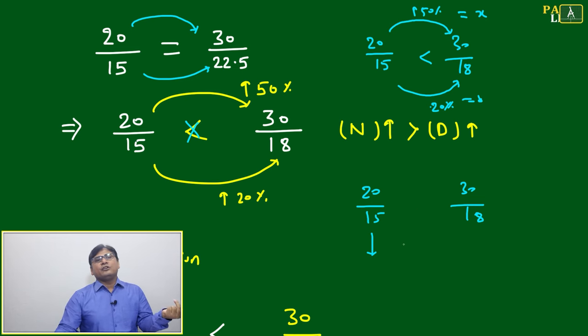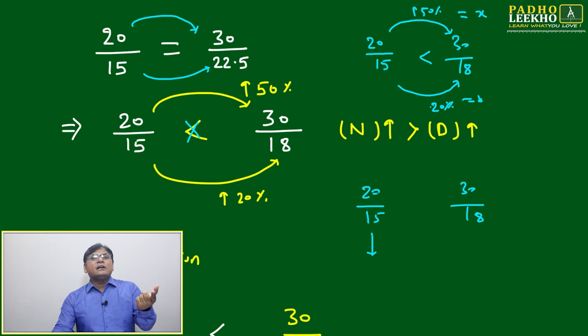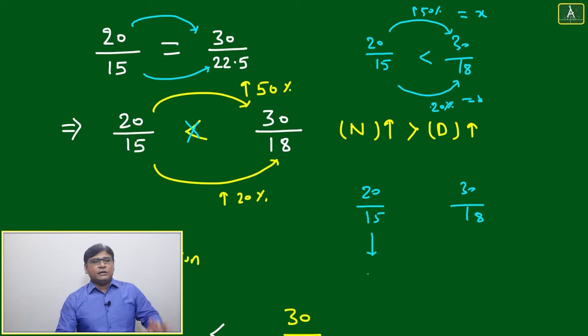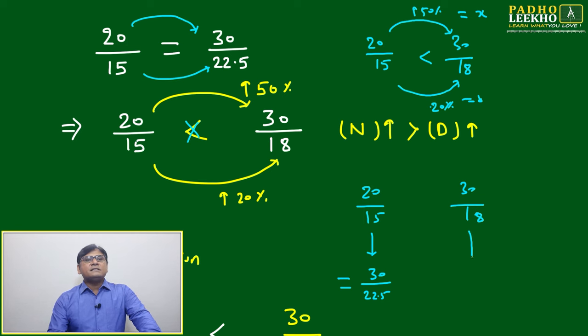We'll check - we'll try to convert 20 into 30. Then once you convert it into 30, then 15 will convert into 22.5. Then only the ratio will be same - this is equal. 20 by 15 will now - we are not changing this, we are keeping it as it is: 30 by 18.